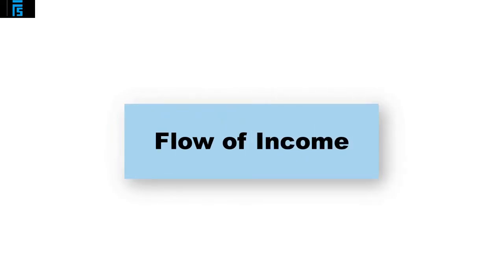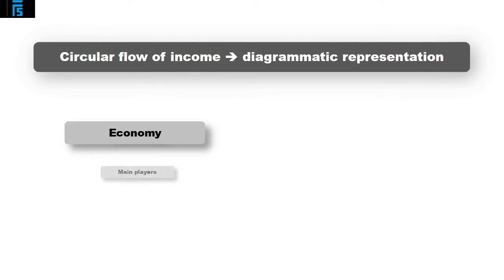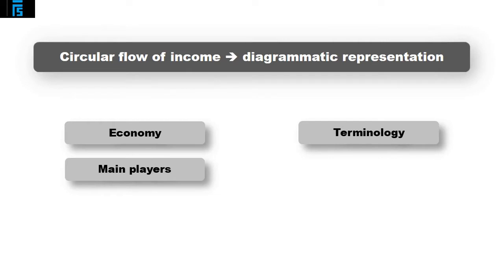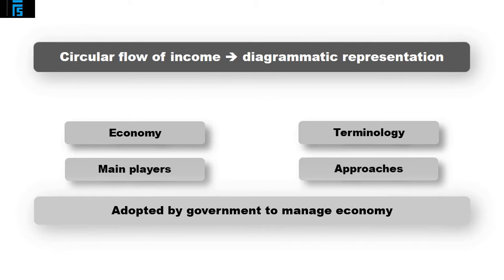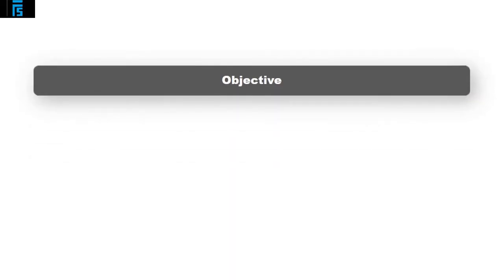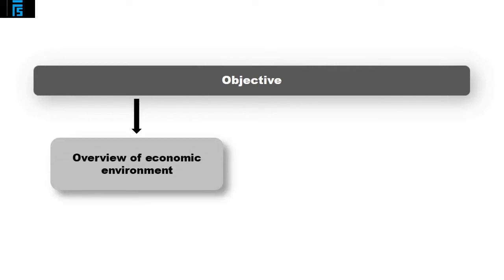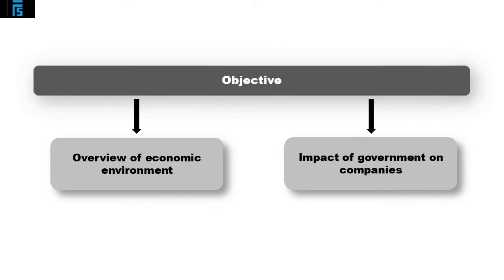In this presentation, I'm going to look at the circular flow of income. The circular flow of income is a diagrammatic representation of the economy, the main players, the terminology, and some of the approaches that might be adopted by governments in an attempt to manage the economy. Whilst this is not intended to be a detailed economics lecture, it will provide an overview of the economic environment within which companies operate and highlight how actions taken by governments can affect the operations of companies.